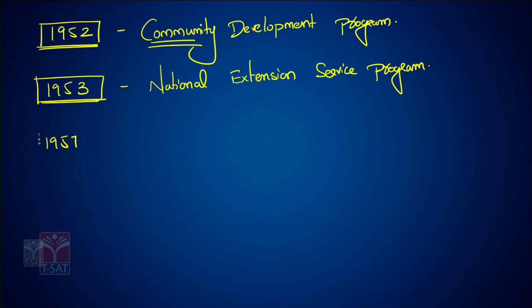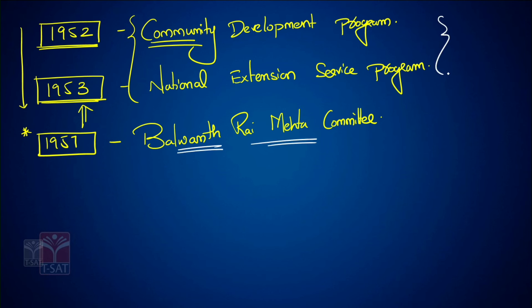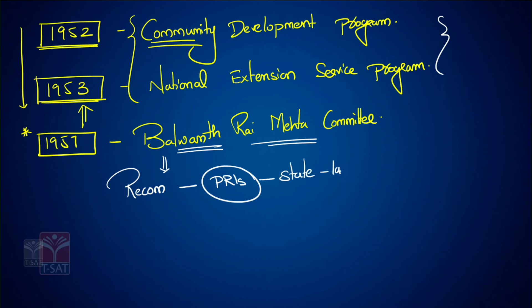In 1957 — very important for the exam — to assess how the Community Development Program and National Extension Service Program were functioning, the government constituted the Balavantharai Mehta Committee. The purpose was to review the functioning of these two major programs. The Balavantharai Mehta Committee recommended constituting a Panchayati Raj Institution by each state through a state law — not by the Constitution.